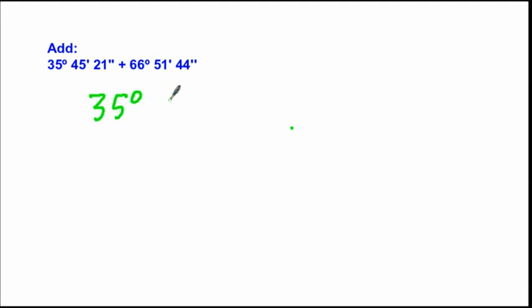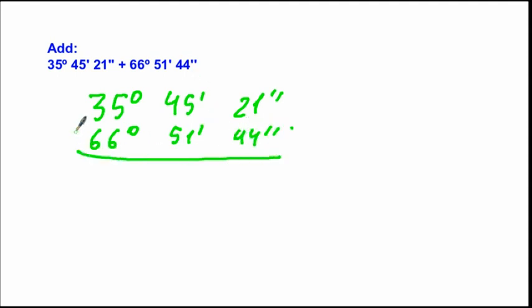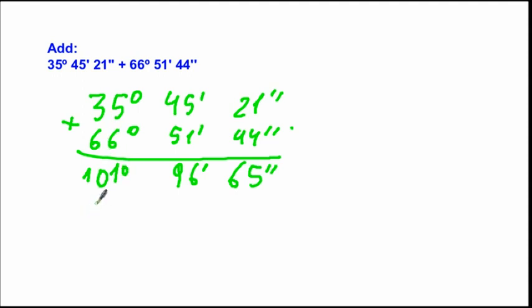Now let's look at addition. We write two numbers one above the other and add them. For example, adding two angles: the result of adding the seconds gives 65 seconds, the minutes give 69 minutes, and we have 1 degree. Note that 65 seconds is more than 60, so we can convert it.